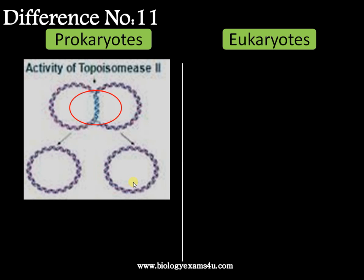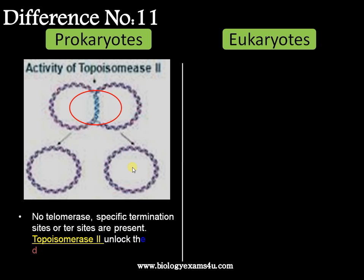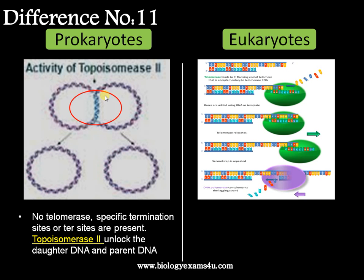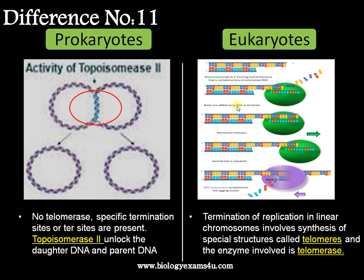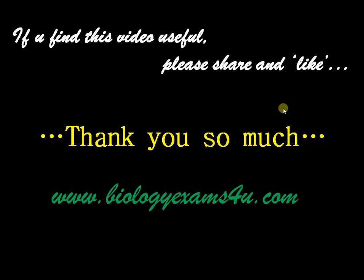Difference number eleven is regarding termination. In prokaryotes, there are specific termination sites where DNA replication stops; since the DNA is circular, the daughter and parental strands become interlocked at the end, and this interlocking is resolved by the enzyme topoisomerase II. In eukaryotes, since the chromosome is linear, specialized structures called telomeres are synthesized at the ends. The end replication problem is resolved by an enzyme called telomerase, making it an elaborate process.